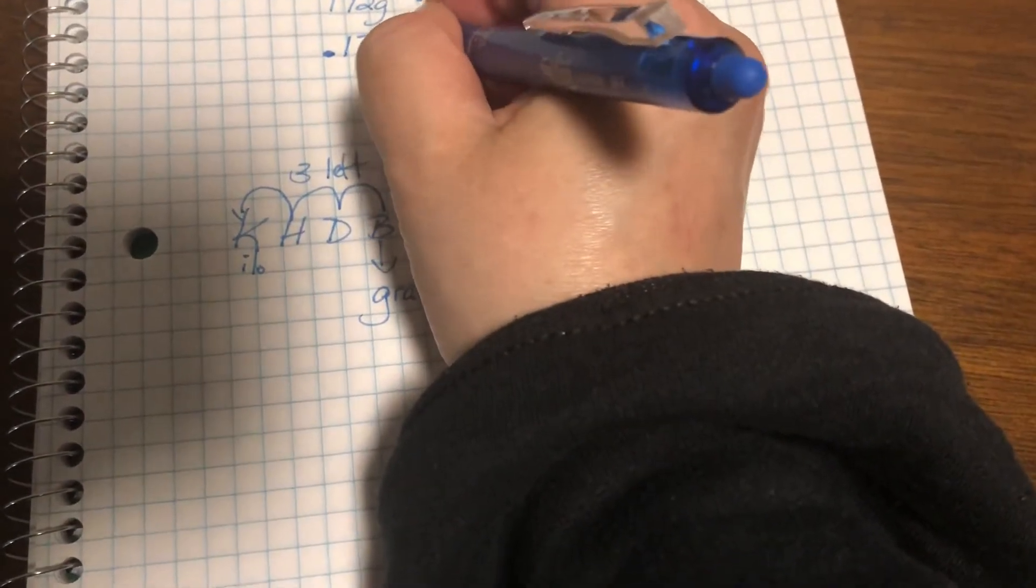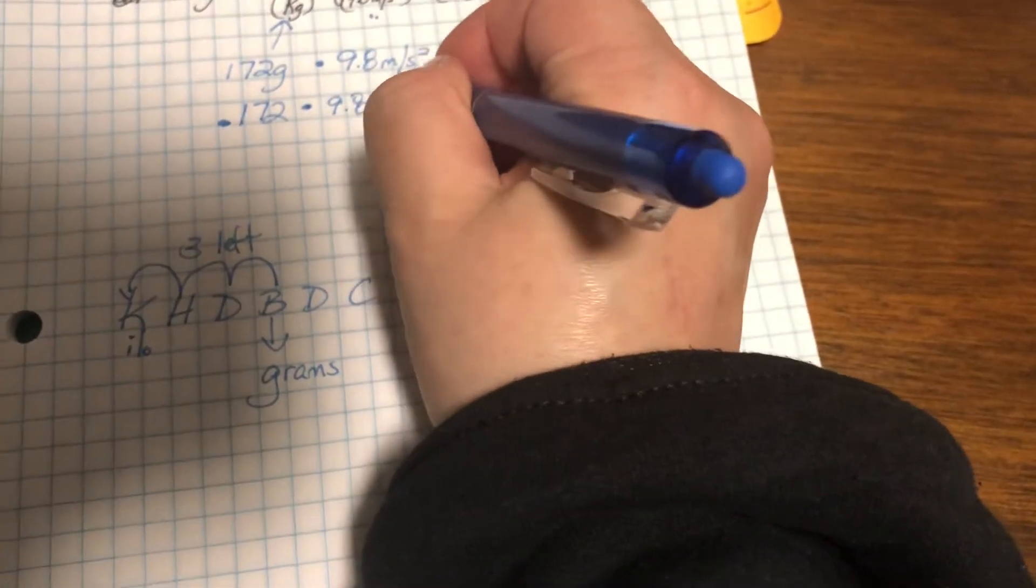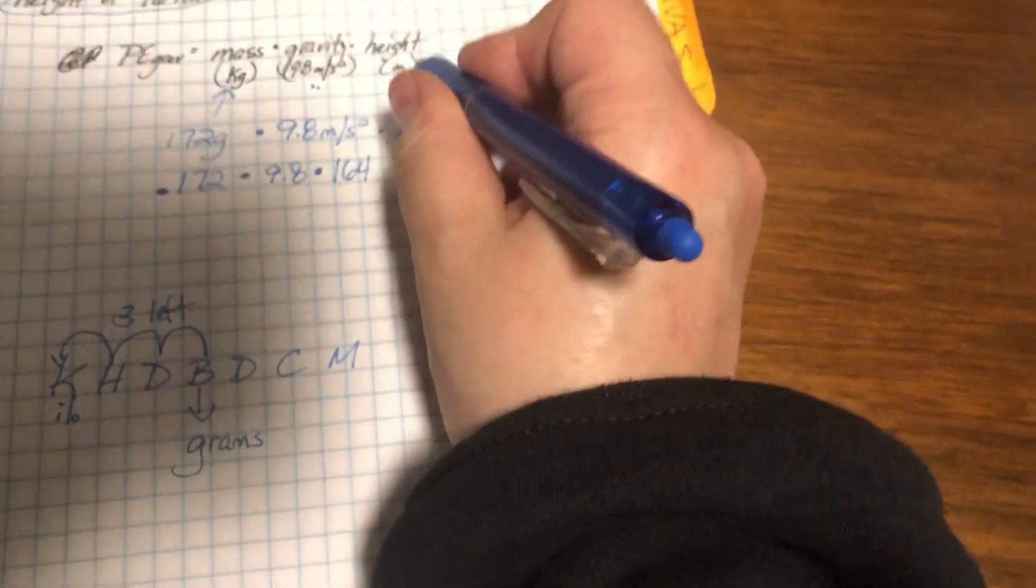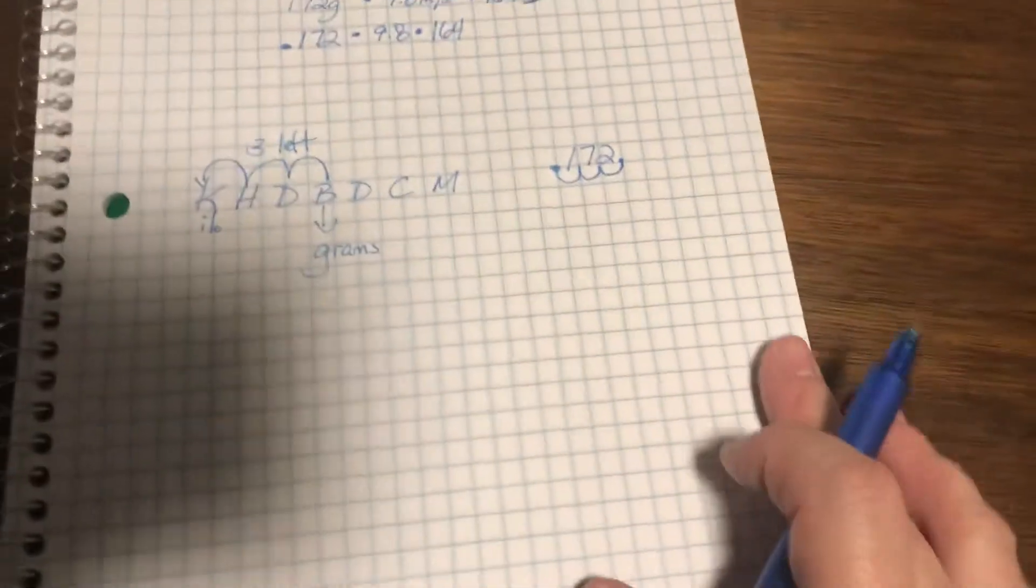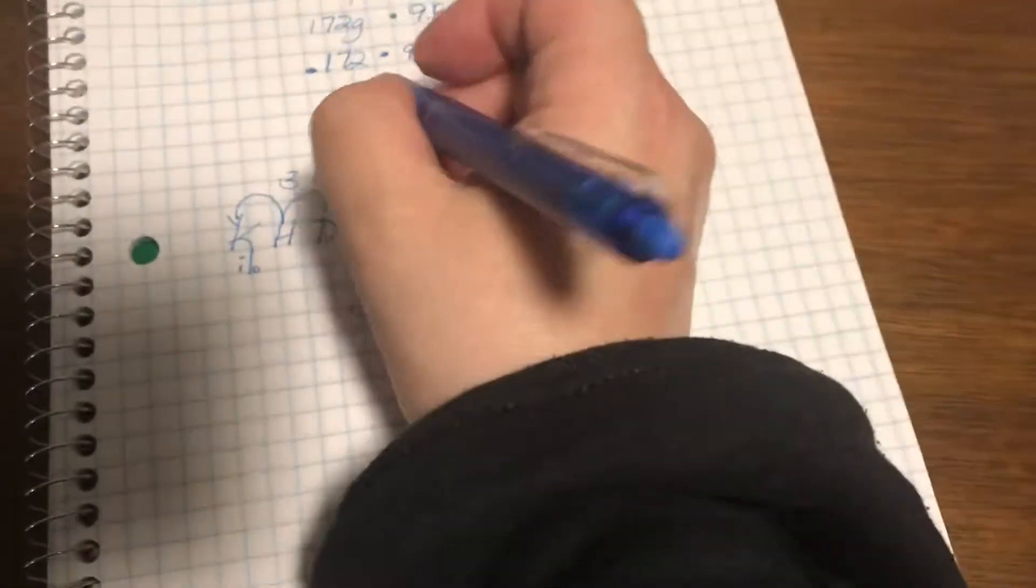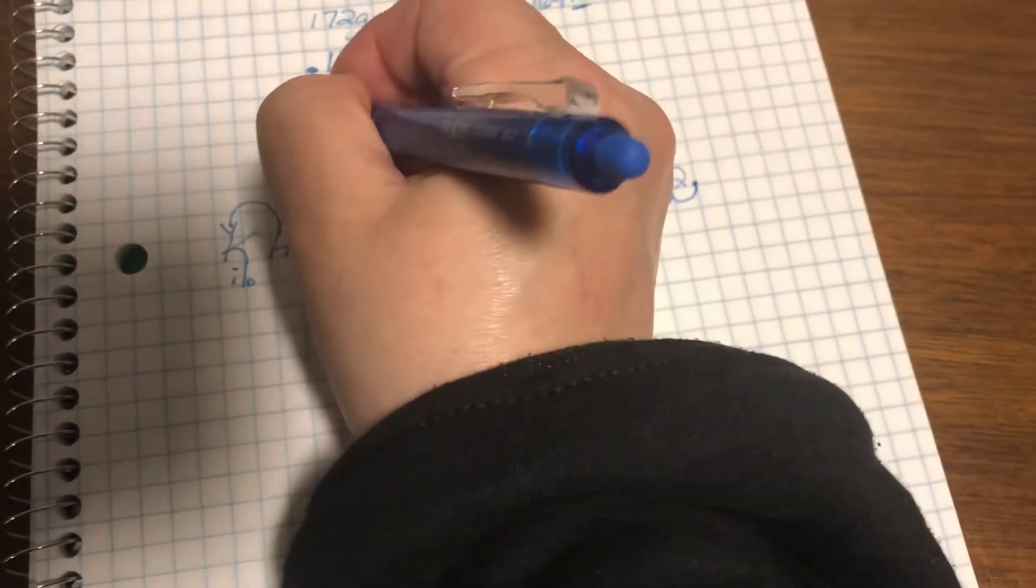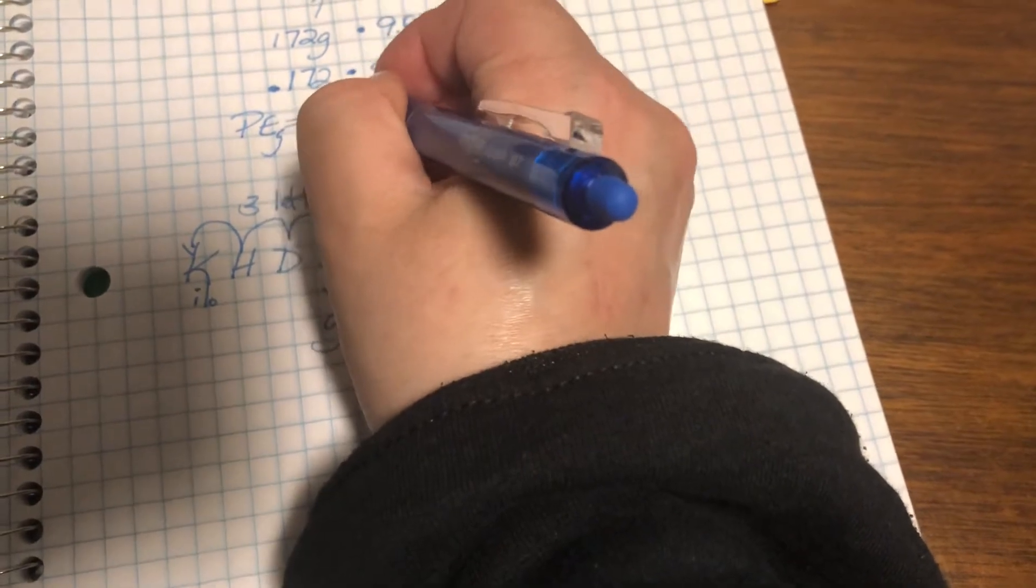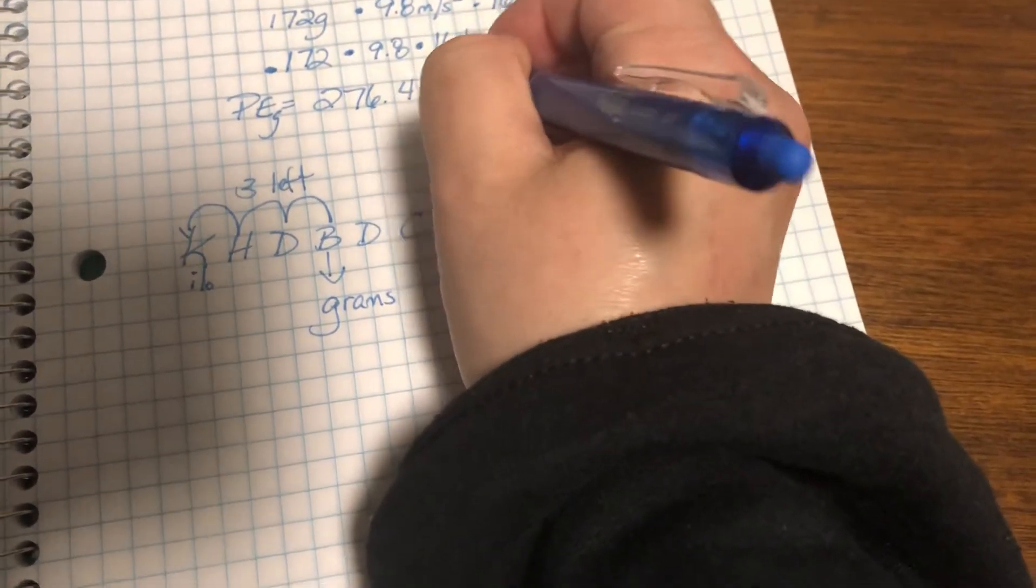So now I have a value of 0.172. I'm going to now multiply that by 9.8, and then I'm going to multiply by 164. This is already in meters, so I do not have to convert. When we calculate with our calculator, we get PE due to gravity equals 276.4384.